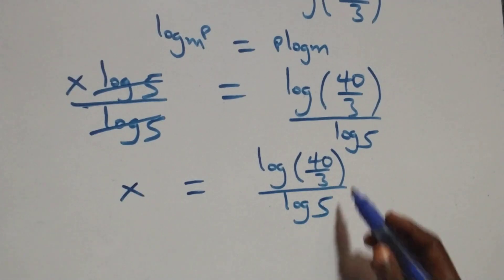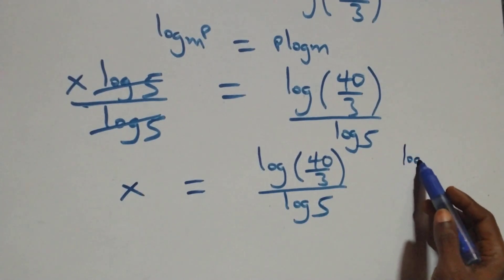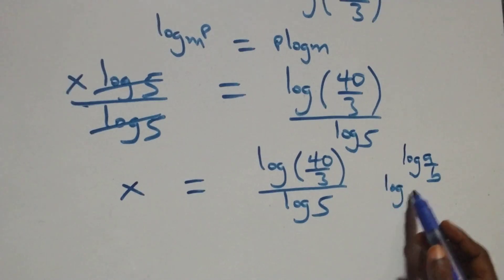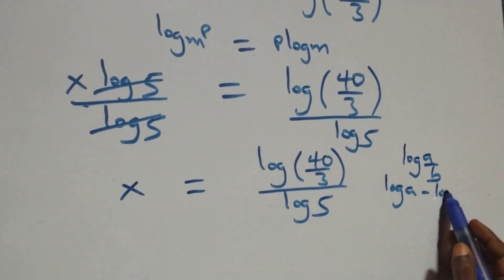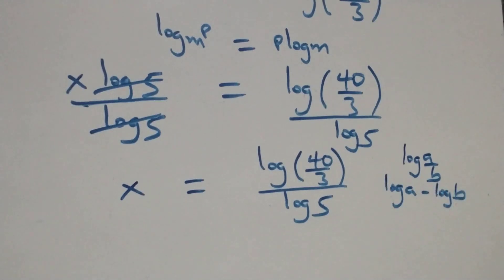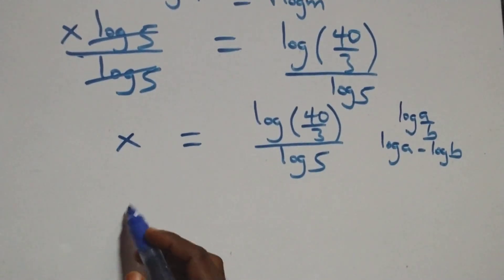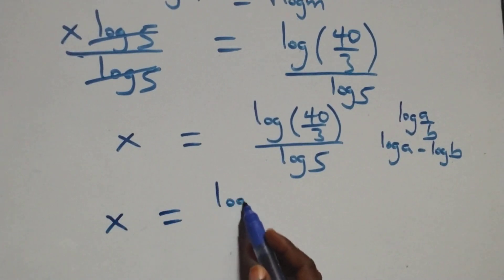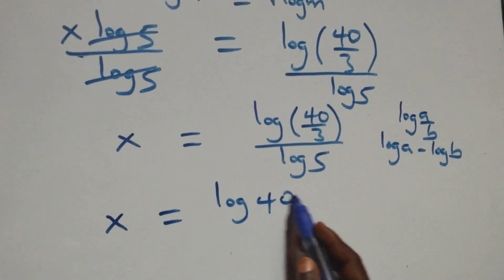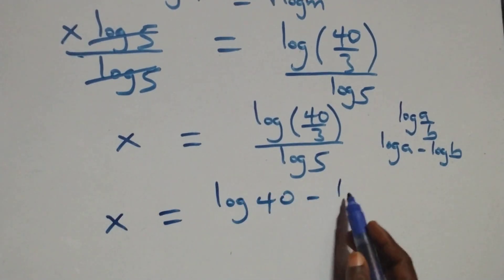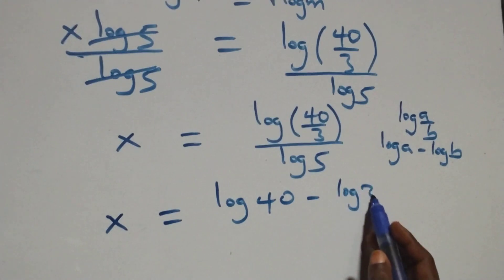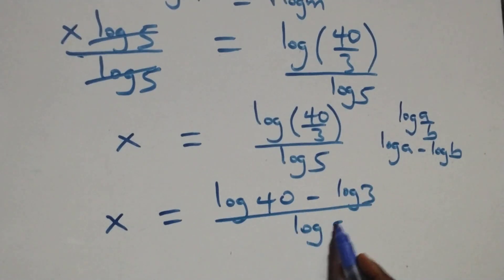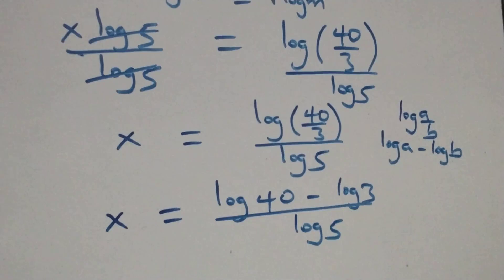This follows the rule: log(a/b) is the same as log a minus log b. So we have x equals log 40 minus log 3, all over log 5.